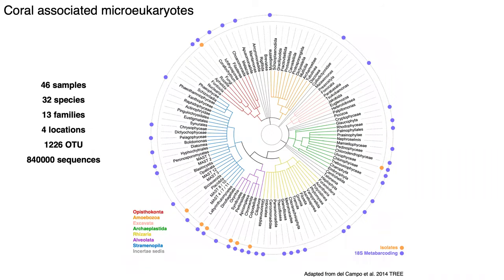We started using this set of primers, beginning with corals. We analyzed 46 samples corresponding to 32 species of corals belonging to 30 different families from four locations, and what we observed is that the diversity we could recover compared with the diversity reported so far for micro-eukaryotes within corals is really dramatic. What we can observe using 18S metabarcoding is much more diverse than what we can observe using microscopic isolation and observation, and not only is it a matter of diversity but also of capacity to quantify and easily screen many different samples.